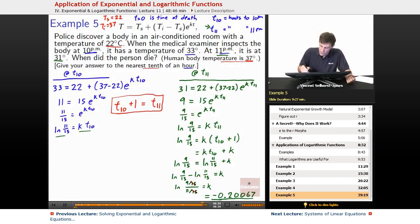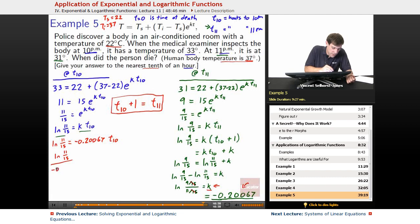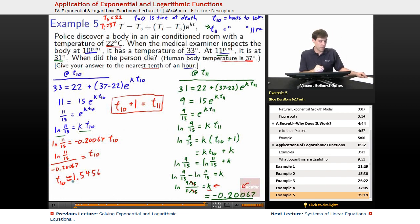That means we can now take this piece of information right here. We know what k is. We slot that in over here. We've got ln(11/15) is equal to -0.20067 t_10. We divide by that, we've got ln(11/15) divided by -0.20067 equals t_10. So t_10 is equal to approximately 1.5456. However, they asked for the nearest tenth of an hour, so that winds up being about 1.5 hours.